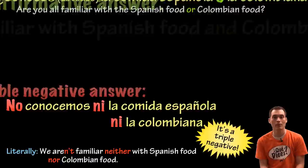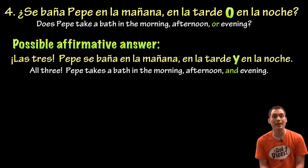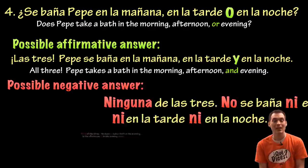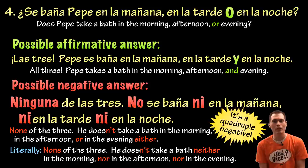¿Se baña Pepe en la mañana, en la tarde o en la noche? Las tres. Pepe se baña en la mañana, en la tarde y en la noche. Ninguna de las tres. No se baña ni en la mañana, ni en la tarde, ni en la noche. It's like a quadruple negative here — literally, none of the three: he doesn't take a bath neither in the morning, nor in the afternoon, nor in the evening.